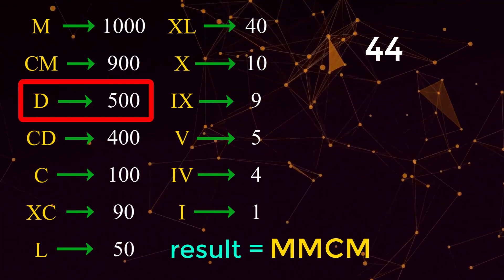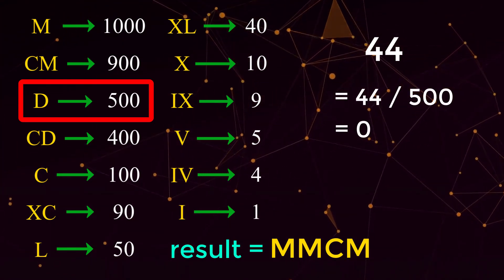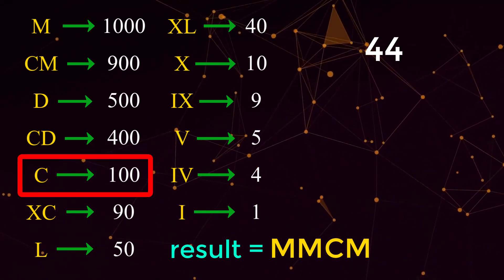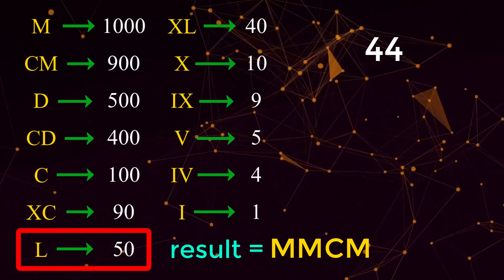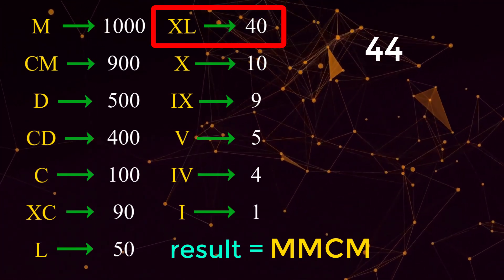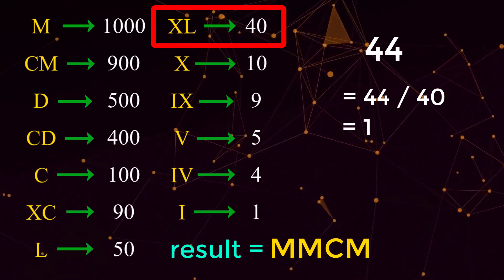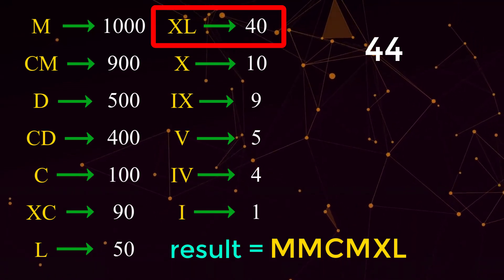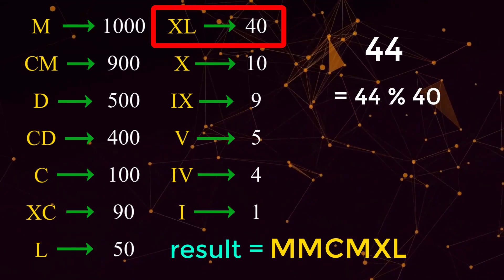We move to numeral D which is 500. 44 divided by 500 is 0. That means we do not add any D to our result. So we're going to continue to move through this array until we get to a roman numeral where the division is not equal to 0. By the time we get to the roman numeral XL which equals 40, we do 44 divided by 40 which equals 1. That 1 corresponds to a single XL roman numeral. So our result is left with MMCMXL. Once again we do 44 mod 40 equals 4.